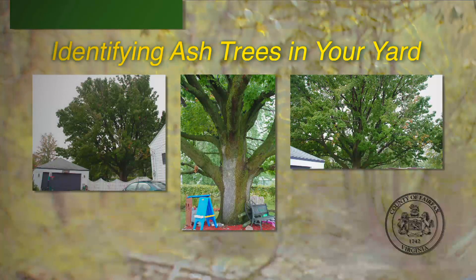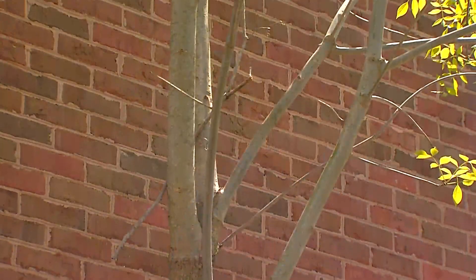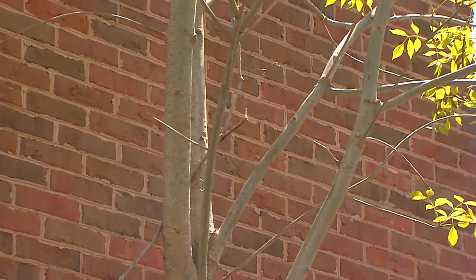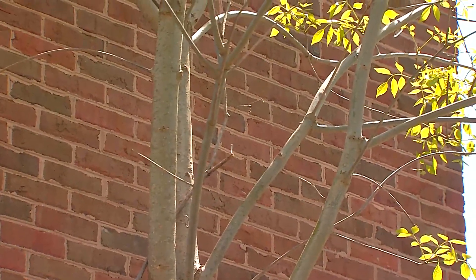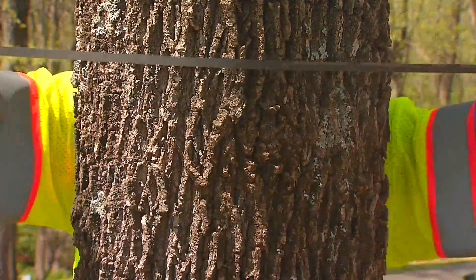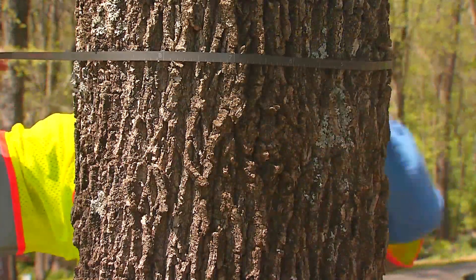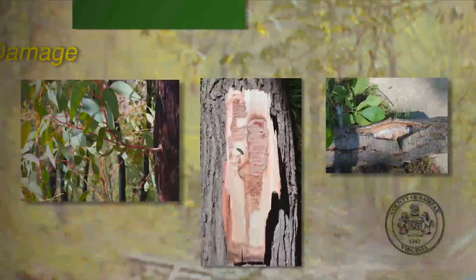Ash trees are one of the few trees native to Virginia that have an opposite branching pattern, meaning branches come out exactly opposite from each other. Ash trees also have a compound leaf, and the bark has a distinctive diamond-shaped pattern.